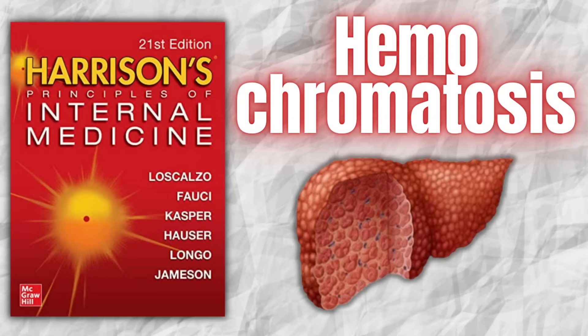Welcome back. Today we will discuss an inherited metabolic condition which is relatively common in European populations — hemochromatosis. In simple terms, this disorder results in iron overload in various tissues and resultant organ dysfunction.